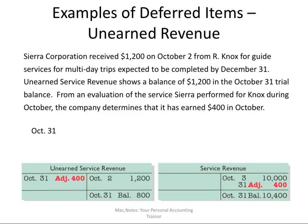This next type of adjusting entry — unearned revenue — sometimes confuses students because it has the word revenue in it. But basically, what it means is the company has accepted cash but has not yet provided the service. Because it has not provided the service, it has a liability to provide that service. That liability we call unearned revenue. Sierra Corporation received $1,200 on October 2nd for guide services to be done by December 31st. The unearned revenue account shows a $1,200 balance at October 31st, but we actually did $400 worth of that service, so we must make the adjustment.